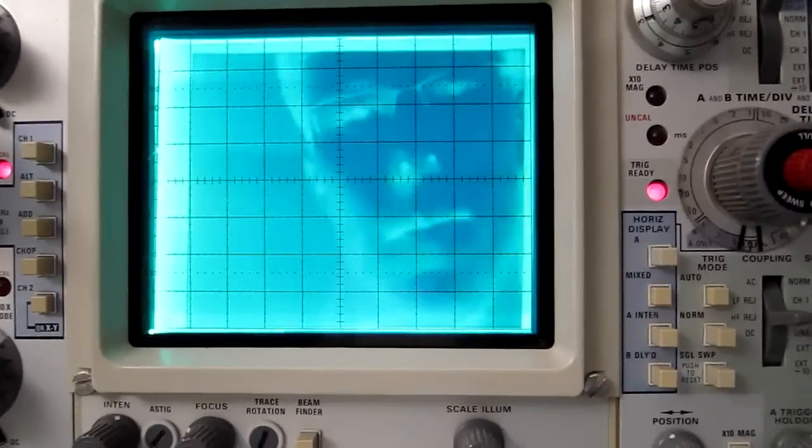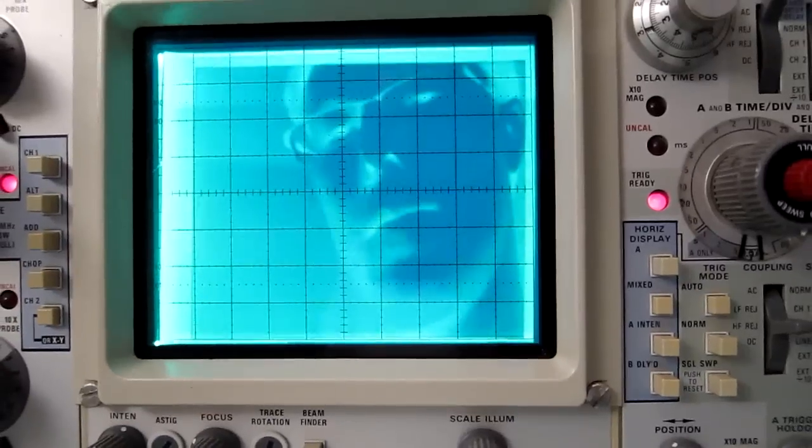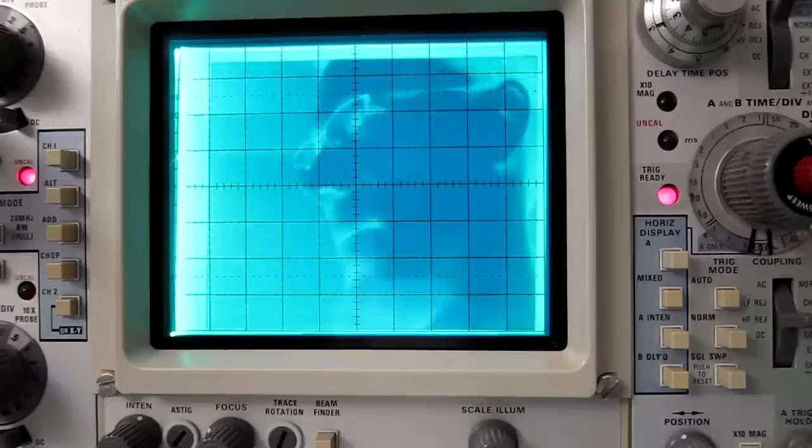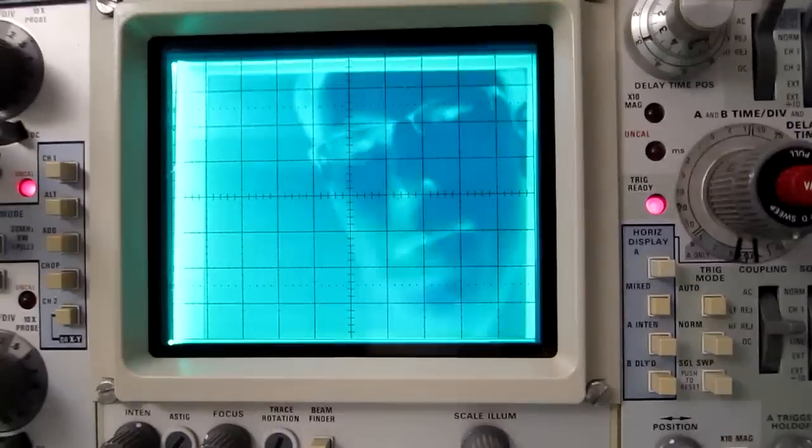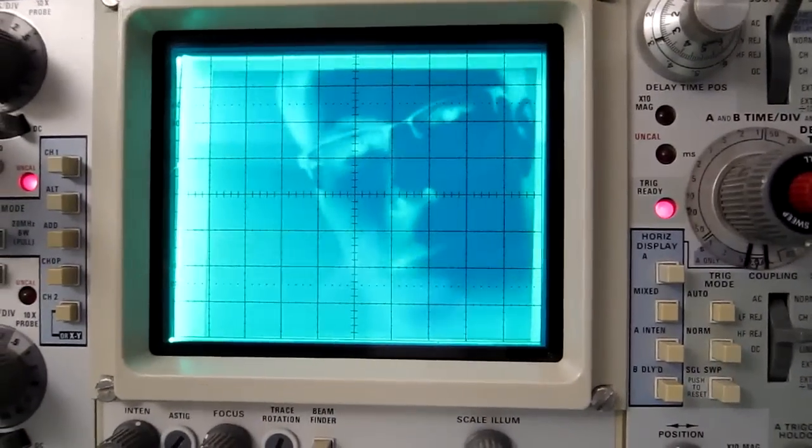And so I feed those to the two inputs of the oscilloscope, which is in XY mode. The video signal itself just goes into the Z axis input at the back of the scope. The input is actually a blanking signal, which means that it's inverted for normal video polarity. For the earlier shots I had to build an inverting amplifier so that you could see a good display.